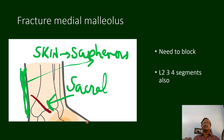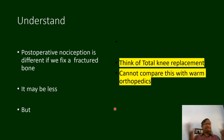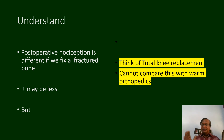For fracture of medial malleolus, sacral segments are blocked even with 5 to 6 ml; but for the skin incision and bone — the saphenous nerve component — we need to block a little higher. Post-operative nociception is different from intra-operative. For a fractured bone already fixed (PFN, fracture tibia, interlocked femur), post-operative nociception differs from total knee replacement or tendon repair — pain is more intense in TKR and THR; we need to be absolutely complete.